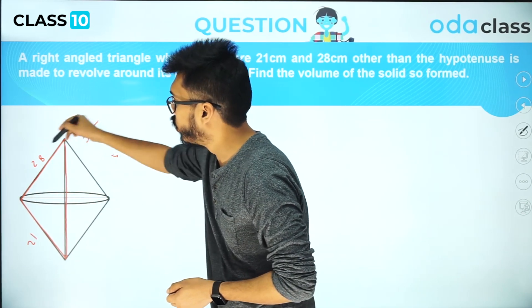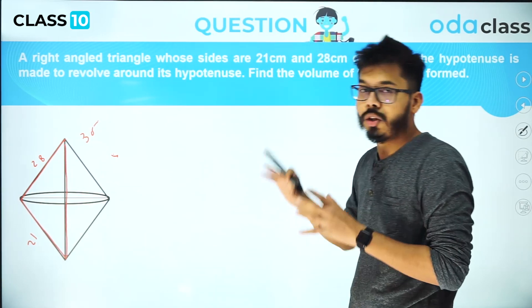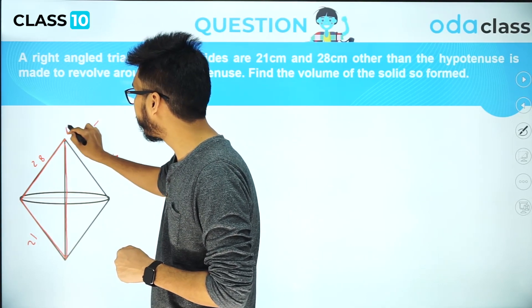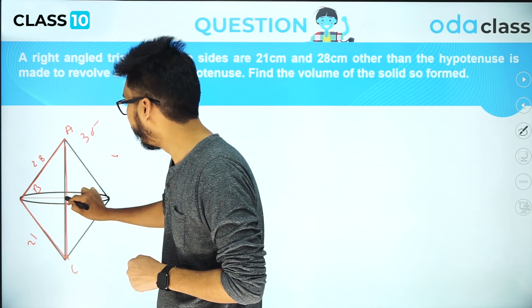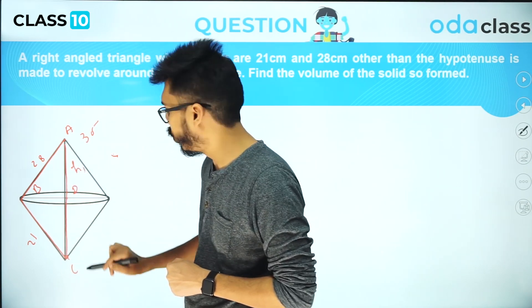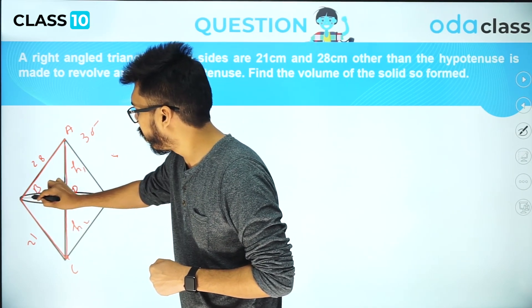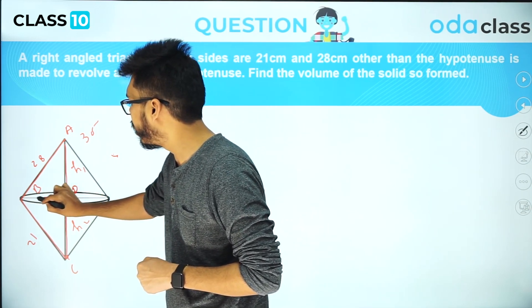The whole triangle is being revolved around the hypotenuse, so we'll get two cones, one at the top and one at the bottom. We are supposed to find the volume of the whole figure. I can name these points as A, B, C and D. We have to target two heights: this I can call h₁ and this I can call h₂. Both cones will have the same radius R.